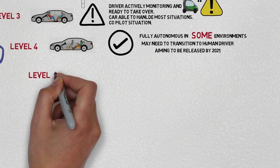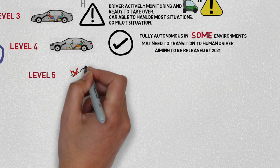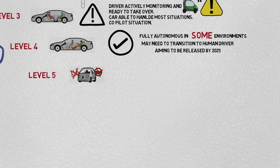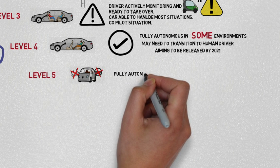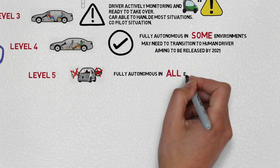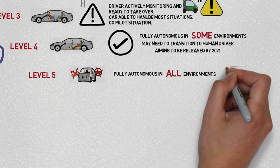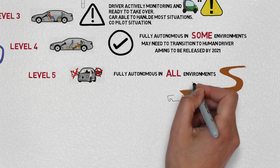Level 5 is the highest level. The car is equal or better than a human driver and can handle all situations including driving on non-sealed roads. Potentially there's no steering wheel, no option for human control.